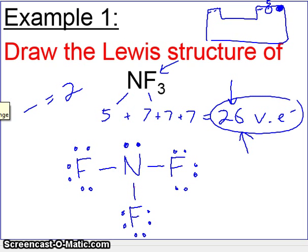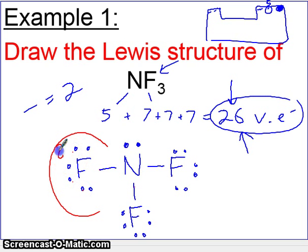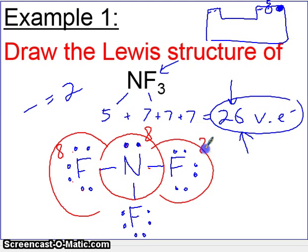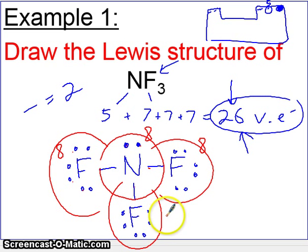We can now check to make sure every element has eight electrons. Take a look at this fluorine — it has eight. This works. Take a look at this nitrogen — it has eight. That matches. This fluorine is the same as the one on the left — that matches. And this fluorine is also the same. So we have drawn this structure properly.